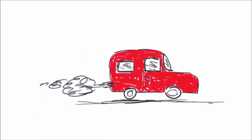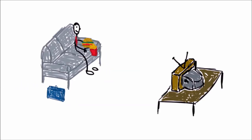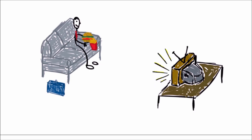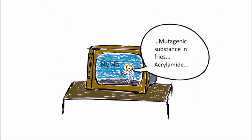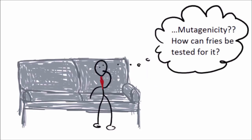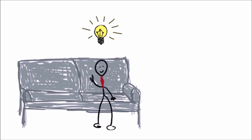In high spirits, he drives home. To clear his mind after the stressful day, he turns on the TV during dinner. The news is on — a mutagenic substance called acrylamide has been discovered in french fries. Tom looks at his fries and suddenly has no appetite at all. Mutagenic — what does that even mean, and how can you find out whether a substance is mutagenic?